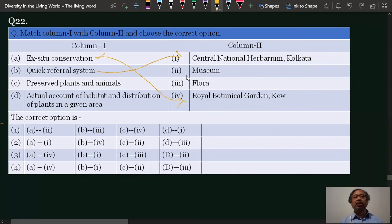Any herbarium is for quick identification and helps with taxonomy. C is preserved plants and animals. Preserved plants and animals are kept in museums, so this matches with two.